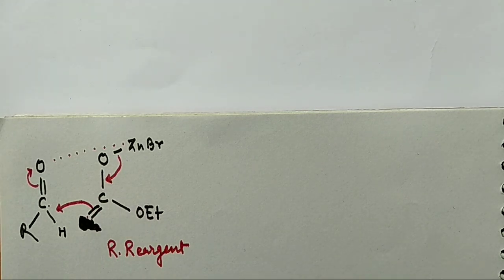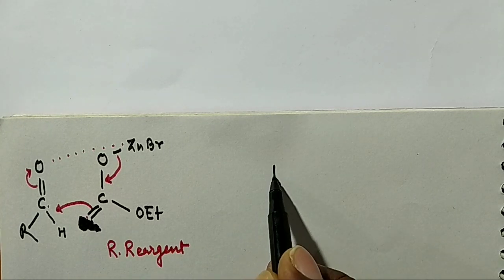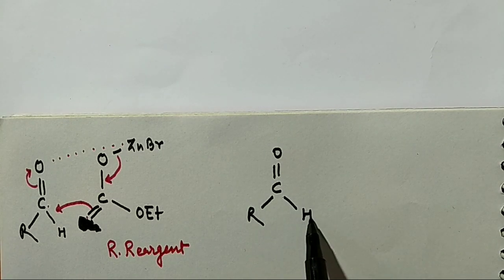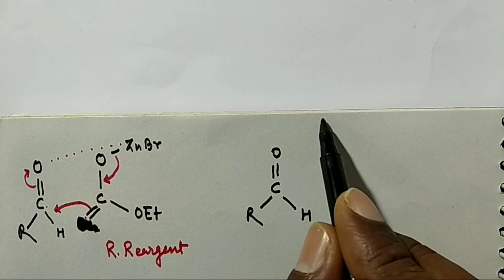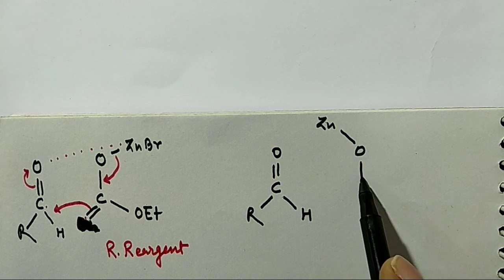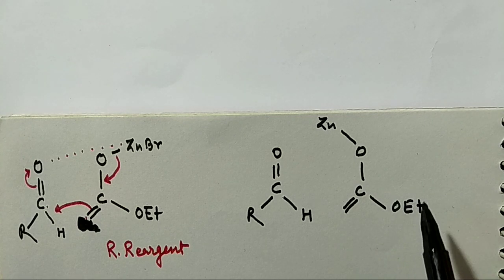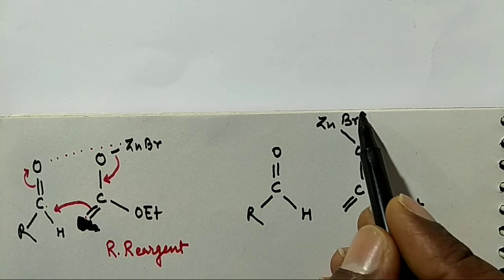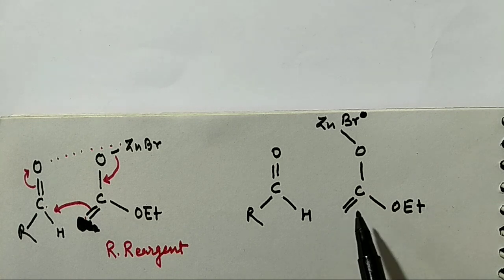Drawing the structure again: C double bond O, with R and H — this is the carbonyl group of aldehyde or ketone. And then Zn–O–C(=O)–OEt — this is the zinc enolate. The bromine is present as Br⁻. So this is the zinc enolate and this is the Reformatsky reagent.